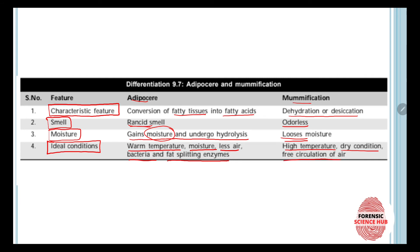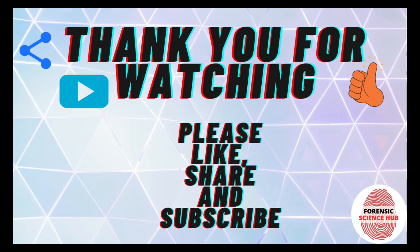So we can differentiate mummification and adipose ear on the basis of these four points: characteristic feature, smell, moisture, and ideal conditions. I hope you understood the difference between adipose ear and mummification. Thank you for watching. If you found the video useful, please like, share it with your friends, subscribe to my channel, and hit the bell icon to get notified whenever I upload a new video.